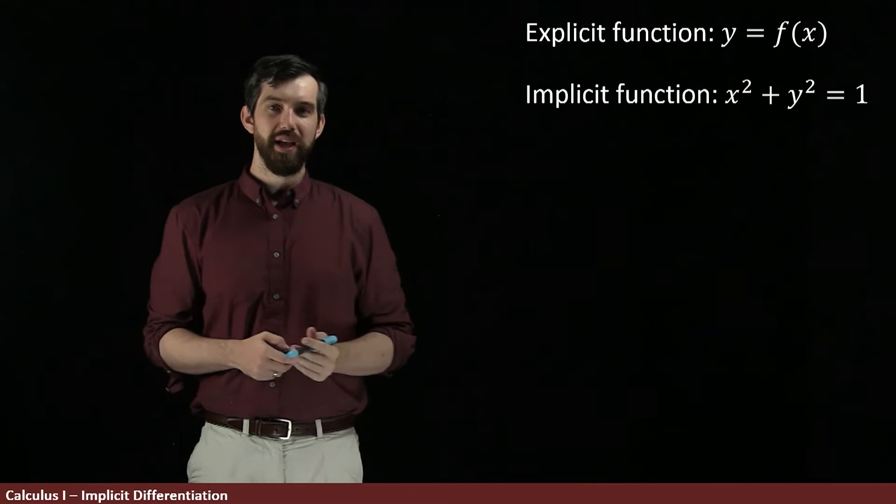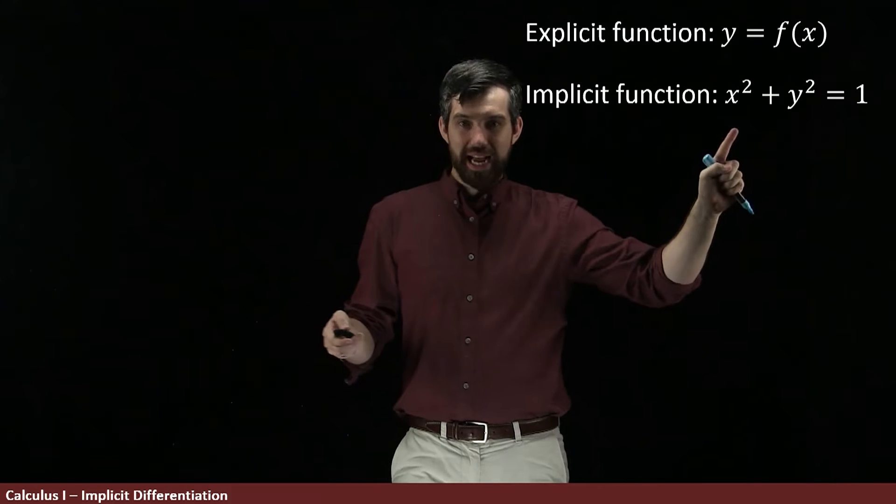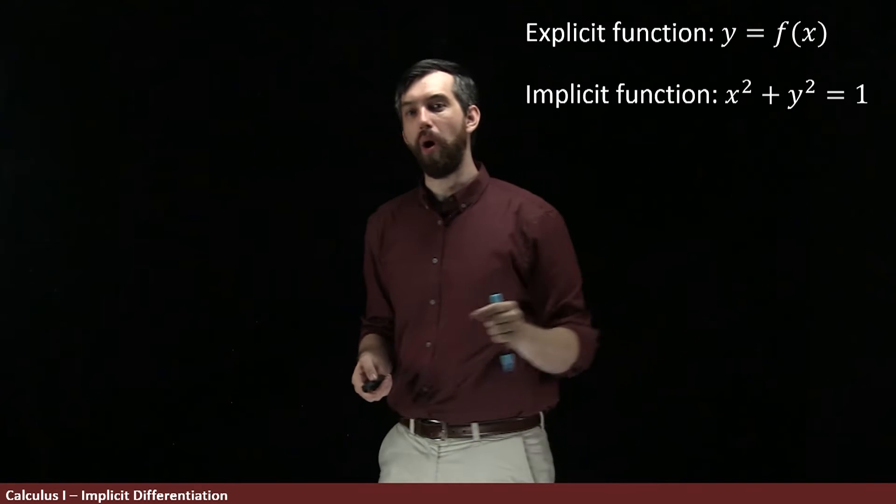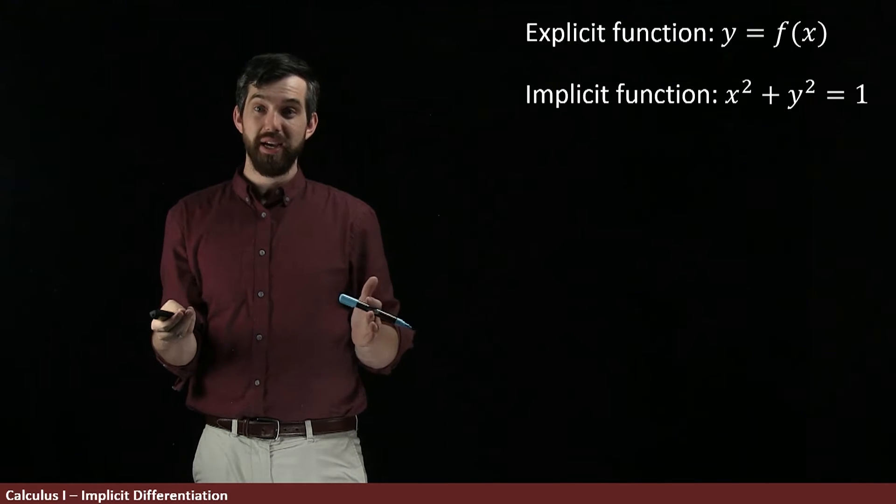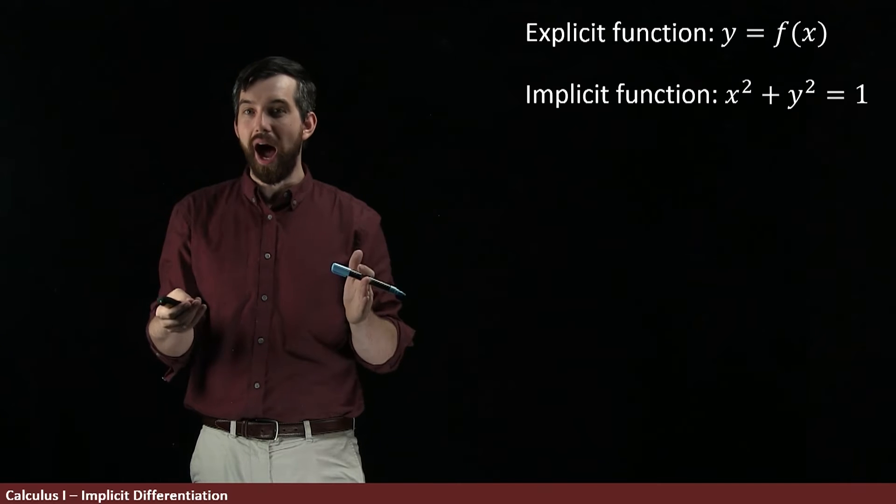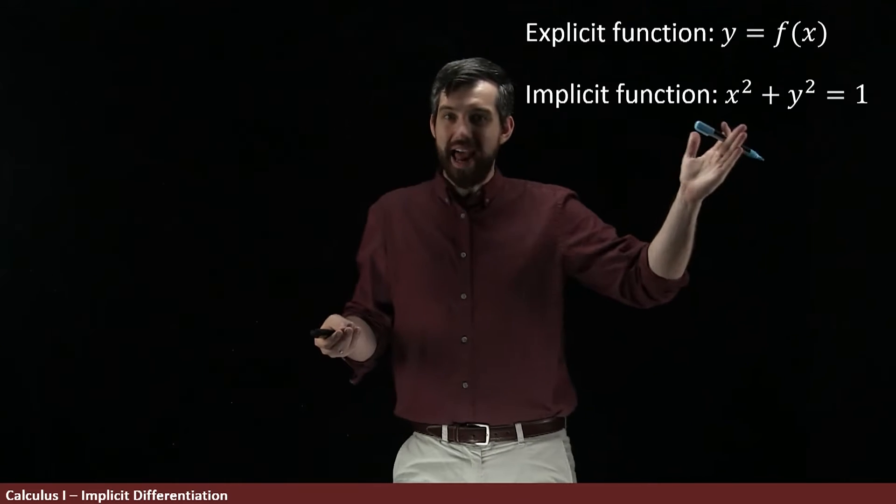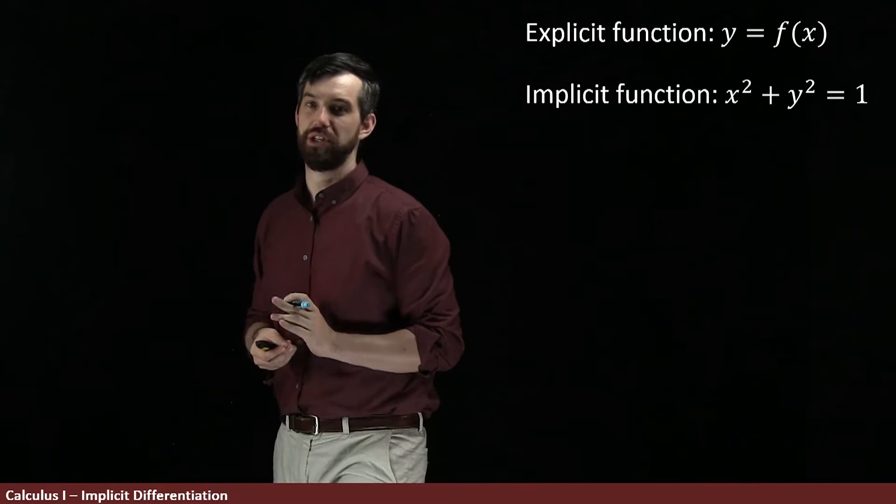So here's an example. I have some equation x squared plus y squared is equal to 1. Now for every value of x, there may or may not be some number of y's that you can find such that for that x and y pairing, this equation is true.